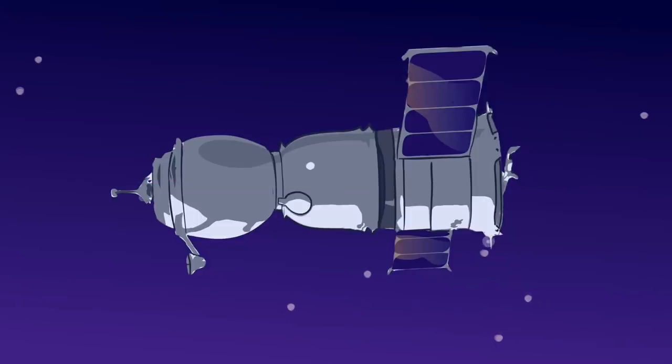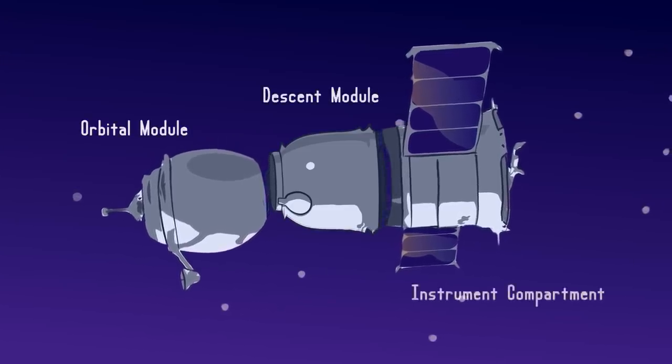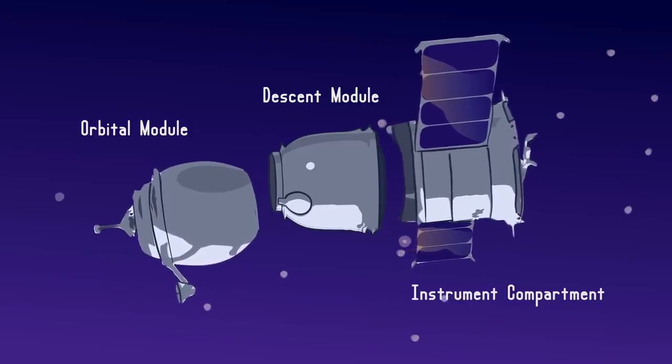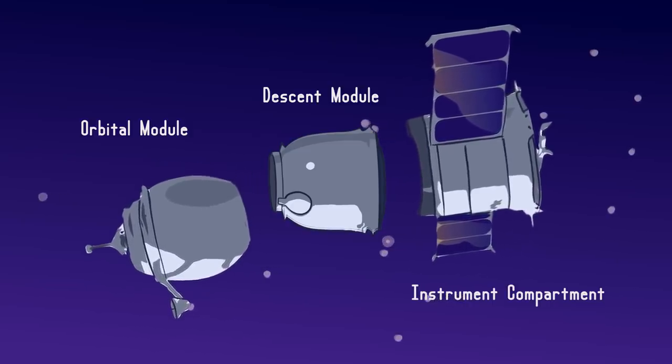Just before re-entering the Earth's atmosphere, often after the de-orbit burn procedure, any final few non-essential components are separated using impactless separation. Only the descent module will make it back to Earth as the others will burn up in the atmosphere.